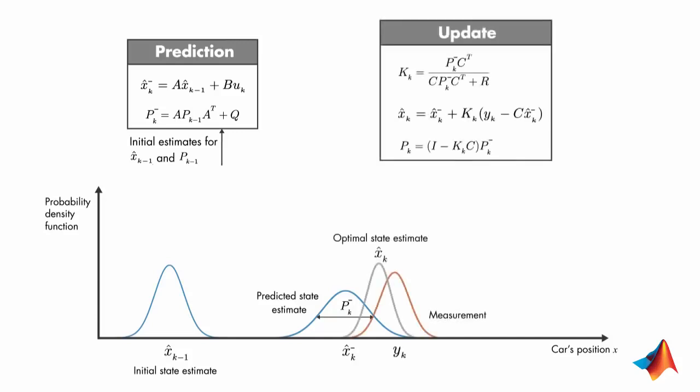The second step of the algorithm uses the a priori estimates calculated in the prediction step and updates them to find the a posteriori estimates of the state and error covariance. The Kalman gain is calculated such that it minimizes the a posteriori error covariance.